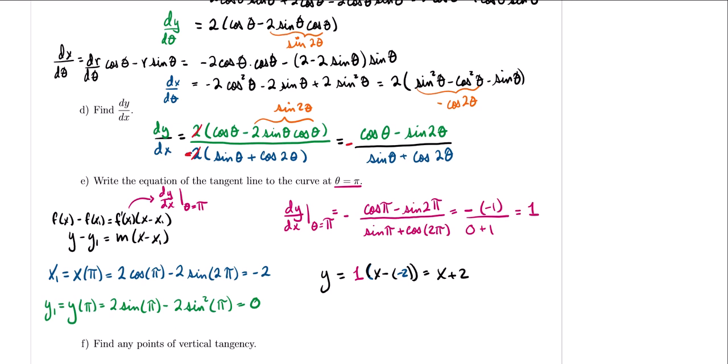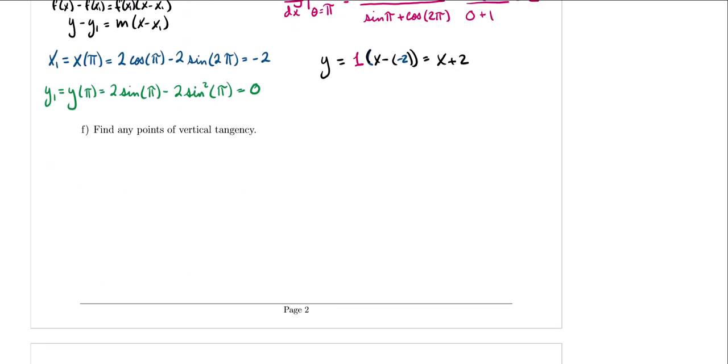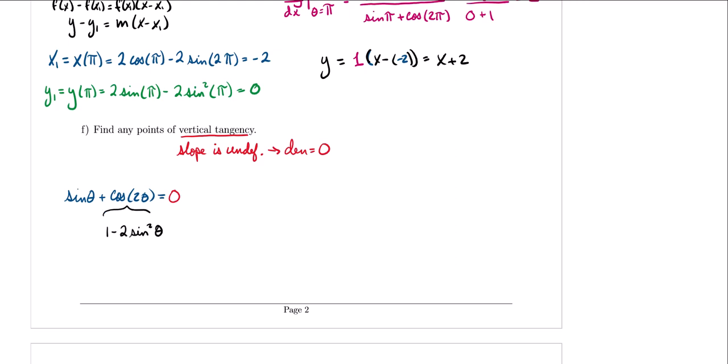For part f, we find points of vertical tangency, which occur where the slope is undefined — that is, where the denominator equals zero. Our denominator is sine theta plus cosine 2θ, set equal to zero. To solve this trigonometric equation, we need everything in terms of the same trig function. Since cosine 2θ equals 1 minus 2 sine squared theta, substituting gives sine theta plus 1 minus 2 sine squared theta equals zero, which I'll use to simplify.